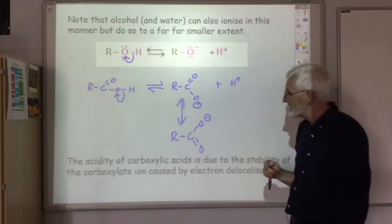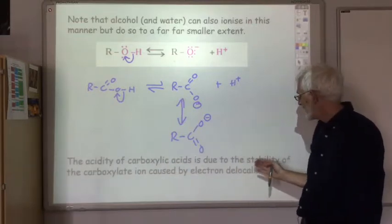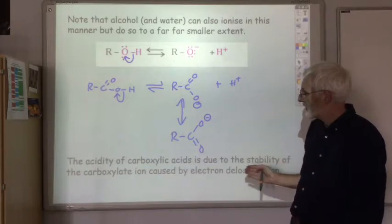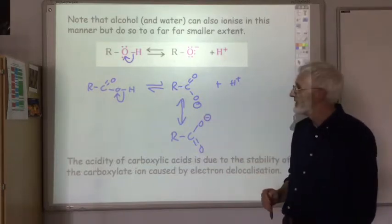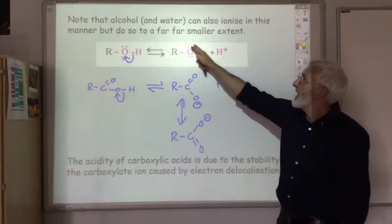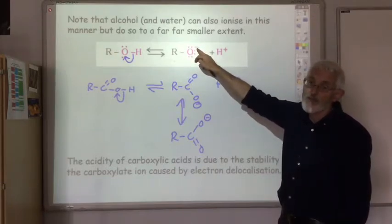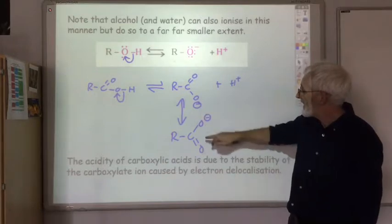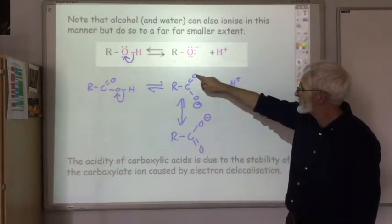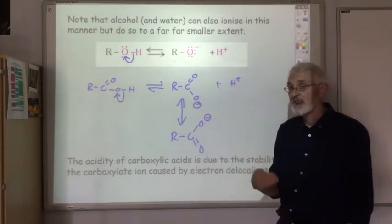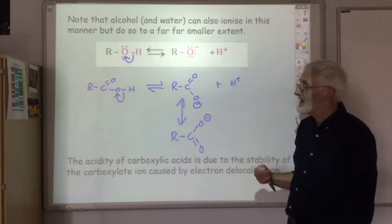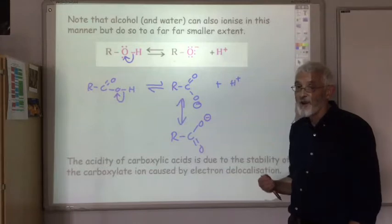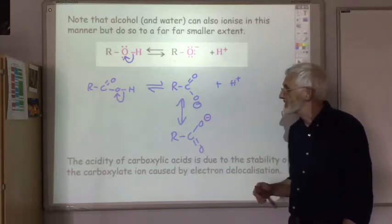So, the acidity of the carboxylic acids is due to the extra stability of the carboxylate ion caused by the electron delocalisation. In the alcohol, there's no other place for the negative charge to go, here it can alternate between being on that oxygen and that oxygen, and that delocalisation gives the ion extra stability, hence making the carboxylic acid a lot more acidic than alcohols.